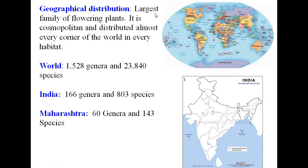Regarding geographical distribution, Asteraceae is the largest family of the flowering plants in the world. It is cosmopolitan and distributed in almost every corner of the world in every habitat. The family contains 1528 genera and 23,840 species, out of which 166 genera and 803 species are found in India, and 166 genera and 143 species are found in Maharashtra.